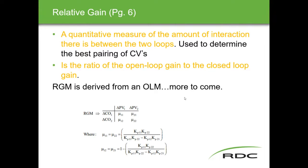I'll walk you through this, possibly blow your minds a little, but I'll make another presentation going into the next 10 or so slides in more depth, so you've had a chance to see it once, read it once, then we'll look at it again. The formulas are provided in the formula sheet. Relative gain is the ratio of the open loop gain to the closed loop gain — that's a definition you need to know.